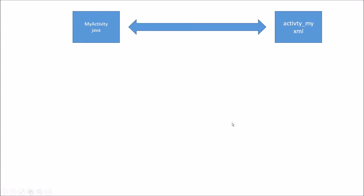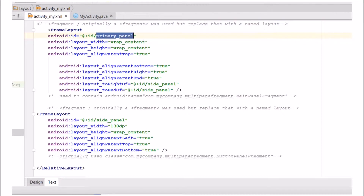I know people hate PowerPoints but this is the easiest way to do this. First thing we're going to do is go back in, open the project, and create some new things. We've already created MyActivity.java and activity_my.xml, so we're going to look at those. We're going to have a frame layout called primary panel and side panel — let's take a look at those.